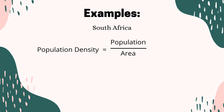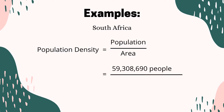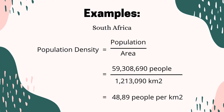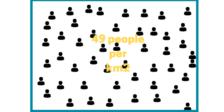Let's look at another example: South Africa. The latest population figure for South Africa is 59,308,690 people, divided by a total area of 1,213,090 square kilometres. Put that in your calculator and you get 48.89 people per square kilometre — rounding up, that is about 49 people within one square kilometre.